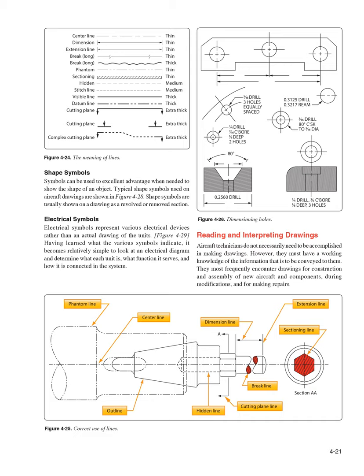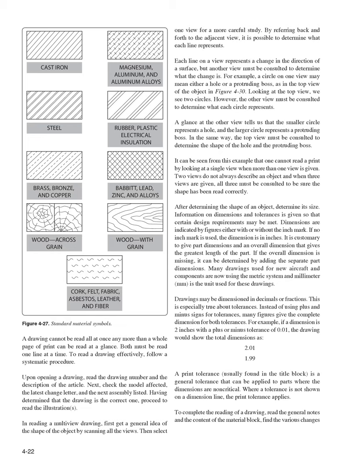Reading and interpreting drawings: Aircraft technicians need not be accomplished in making drawings, but they must have a working knowledge of the information conveyed to them. They most frequently encounter drawings for construction and assembly of new aircraft and components, during modifications, and for making repairs. A drawing cannot be read all at once — both must be read one line at a time. To read a drawing effectively, follow a systematic procedure: upon opening a drawing, read the drawing number and description; check the model affected, the latest change letter, and the next assembly listed. In reading a multi-view drawing, first get a general idea of the shape by scanning all views, then select one view for more careful study, referring back and forth to adjacent views to determine what each line represents.